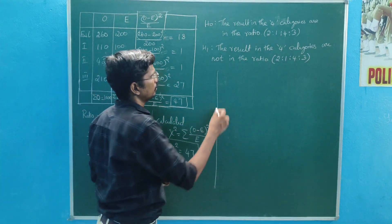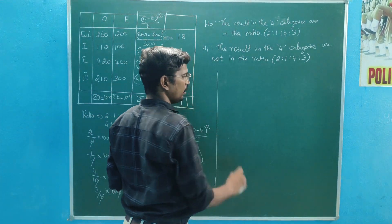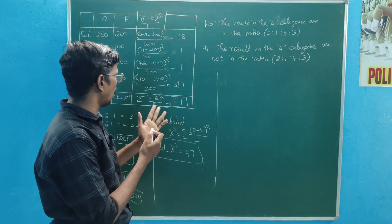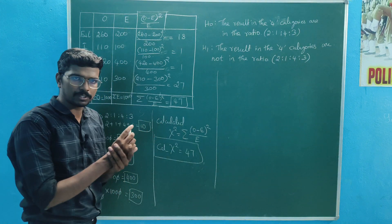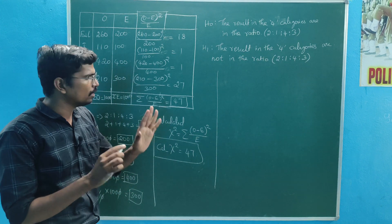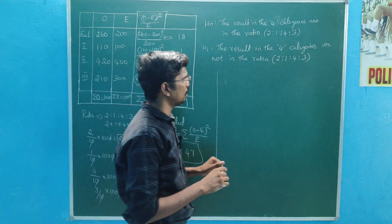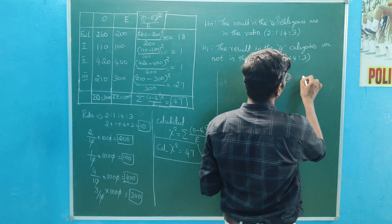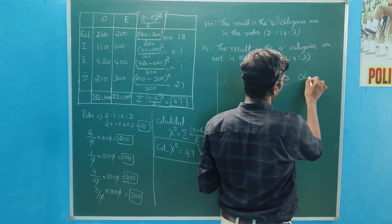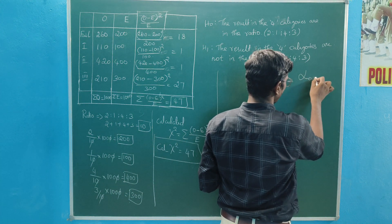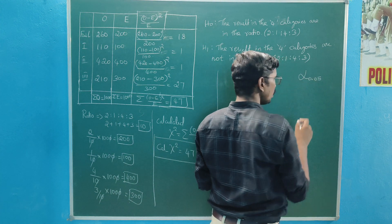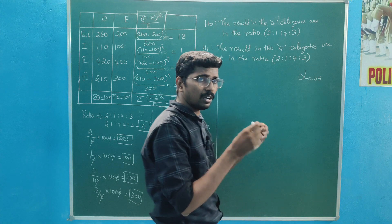The table value — alpha equal to 5 percentage. Alpha 5 percentage, 0.05.